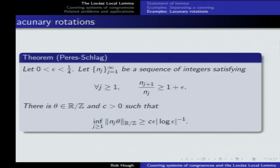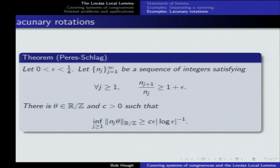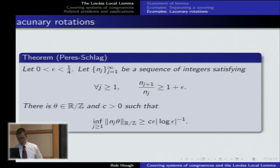Yuval Peres and Wilhelm Schlag gave the following quantification of the fact that there's always a theta with nⱼ theta bounded below. For 0 < epsilon < 1/4, suppose you have a lacunary sequence with common ratio at least 1 plus epsilon. Then there's a theta in the torus and some constant C such that nⱼ times theta is bounded away from all integers by at least C times epsilon over log(1/epsilon). The constant C is uniform; theta depends on the sequence. This result was first proved here.